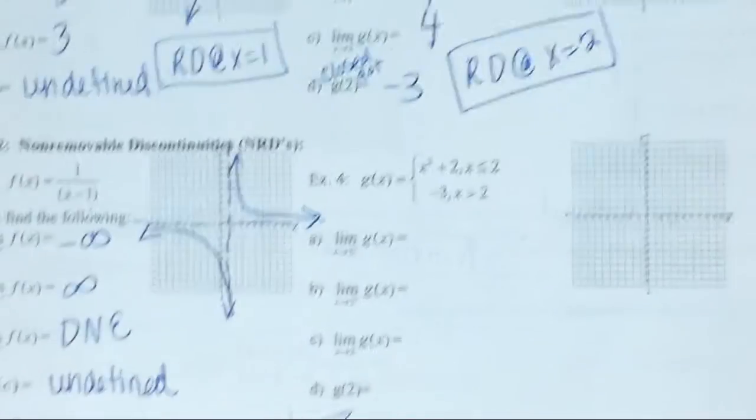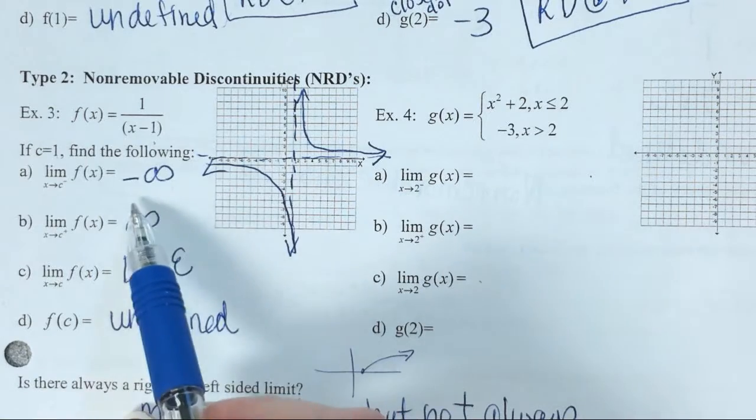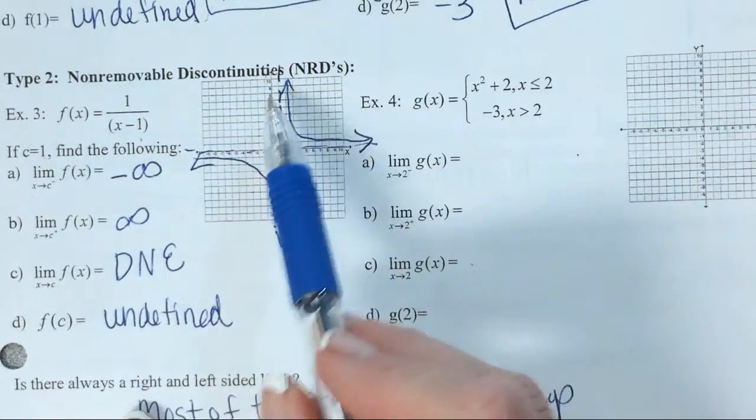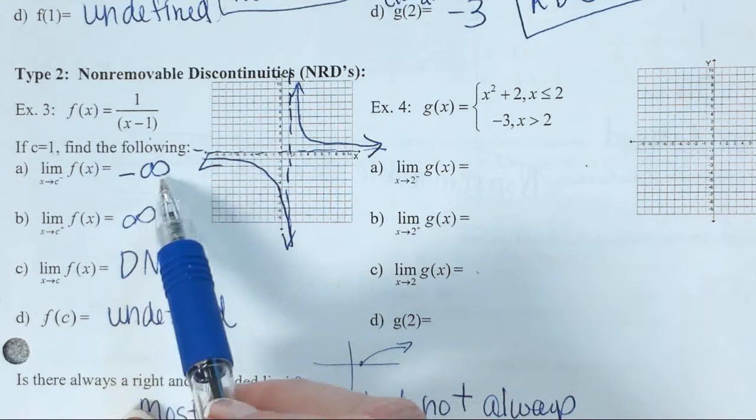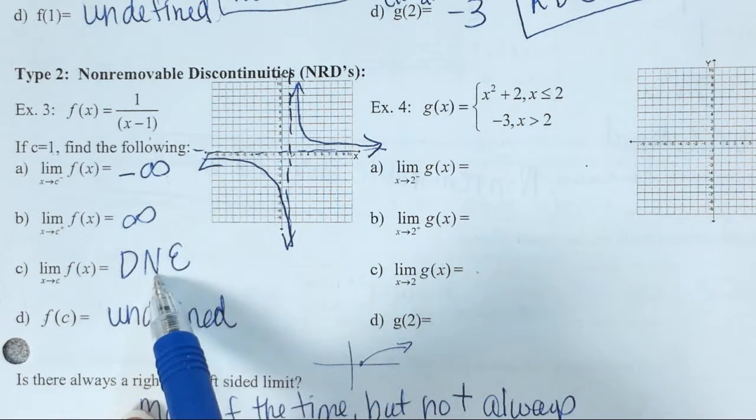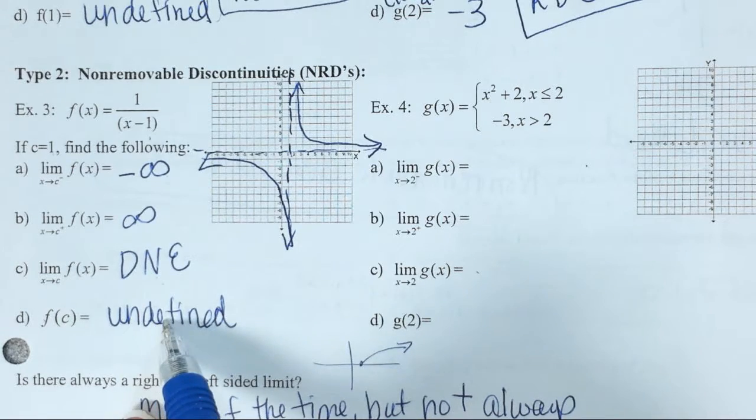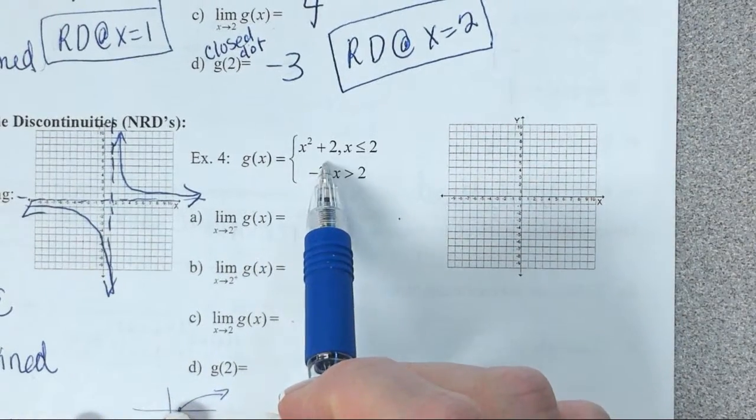All right. So in the next part, we already did a non-removable discontinuity. Here's one way you can look. So one way you can look is we have these asymptotes. And we've got all this bizarre stuff happening on the limit. These are different, so therefore the limit does not exist. We had an asymptote, so that meant our y value was undefined.